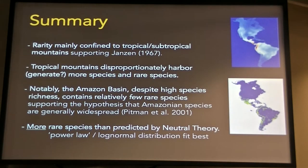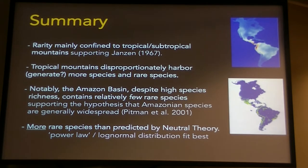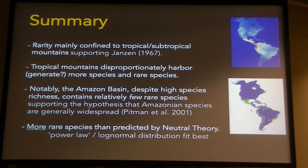To summarize, rarity is mainly confined to tropical and subtropical mountains, supporting the ideas from Janzen. Tropical mountains disproportionately harbor — and, based on our PDI measures, appear to generate — more species and rare species. Notably, the Amazon basin, despite relatively high species richness, contains relatively few rare species. Within the Amazon, geographic range sizes are notably large — there are a lot of species in there, but they all have very large ranges. There are actually more rare species than predicted by neutral theory, so you can test other theories including neutral theory against these functions.